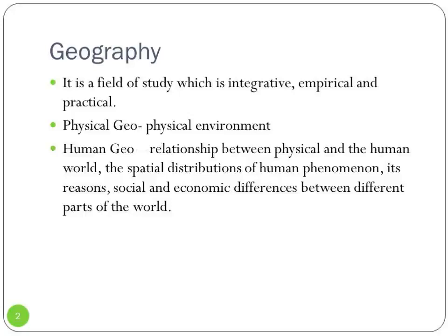In human geography you also study the spatial distribution of human phenomena — meaning which area has how much human population, and how that population is further divided gender-wise, literacy-wise, and occupation-wise. You also study the reasons for social and economic differences across various parts of the world — why any difference exists in an area, its meaning and reason, you try to understand here.